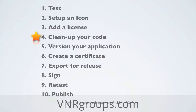Next: version your application. You will need a version code and a version name, both set in the manifest file. Google Market only cares about the version code — that's the version number — so you'll need to increase it every time you release a new version. The version name is yours; you can do whatever you want with it.